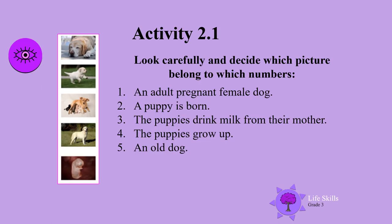Activity 2 continued. Look carefully at these beautiful pictures and decide which picture numbers match. Number one is an adult pregnant female dog — decide which picture it is. A puppy is born. The puppies drink milk from their mother. The puppies grow up. An old dog. Put these sentences in the right order and match them with the pictures.